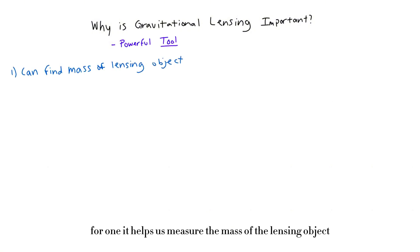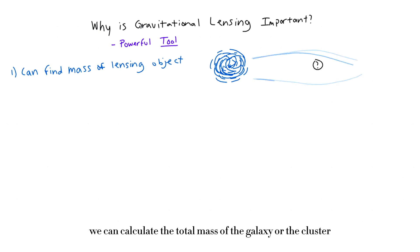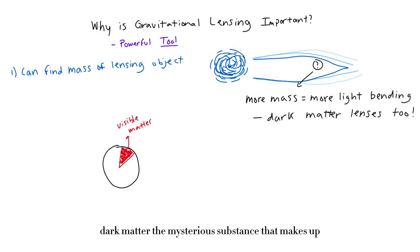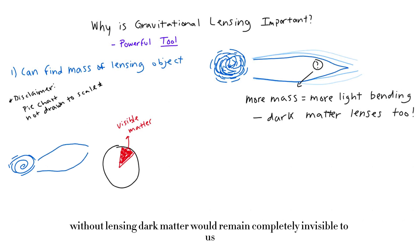Gravitational lensing isn't just a pretty trick. Why is it important? It's a powerful tool for astronomers. For one, it helps us measure the mass of the lensing object. By analyzing how much the light bends, you can calculate the total mass of the galaxy or the cluster, including the invisible stuff, dark matter. That's right, gravitational lensing is one of the best ways we have to map dark matter, the mysterious substance that makes up about 85 percent of the universe's mass. Without lensing, dark matter would remain completely invisible to us. We quite literally discovered that there is more mass in the universe because lensing tells us there is.